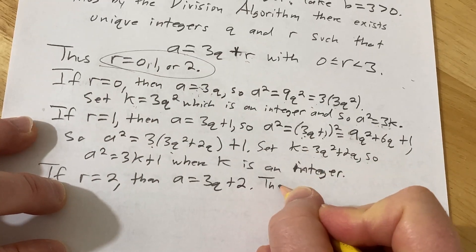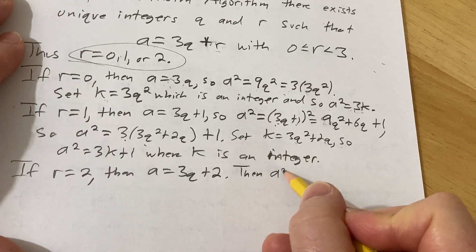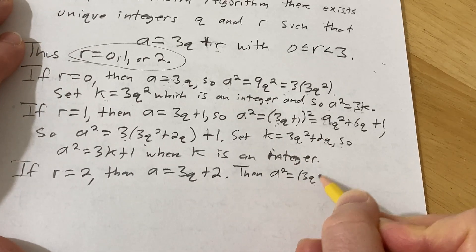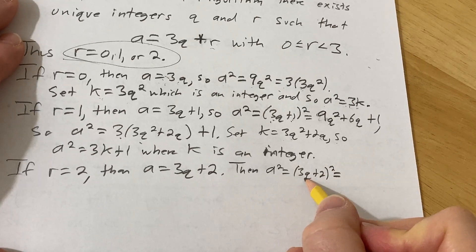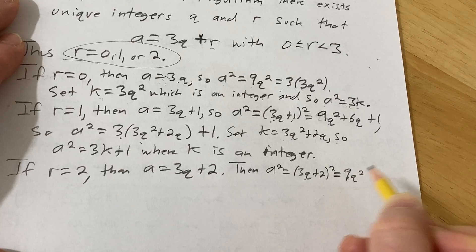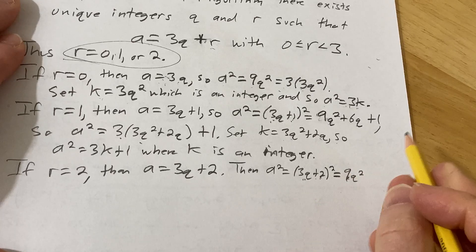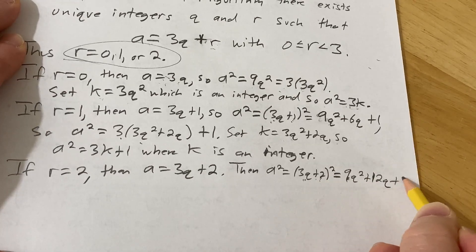So then we're going to look at a squared. a squared is equal to 3q plus 2 squared, which is equal to 9q squared. Multiply these and double them, 6q times 2 is 12q, so you get 4.